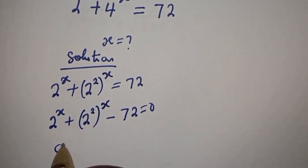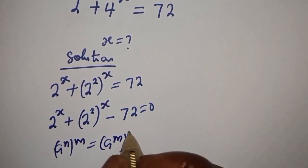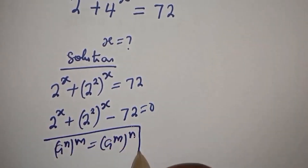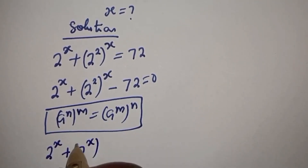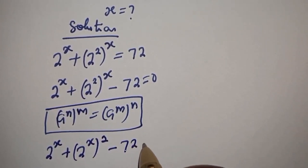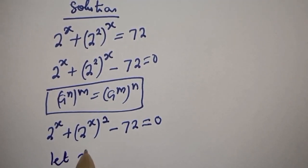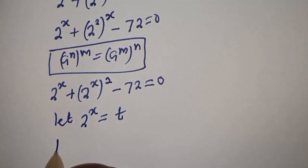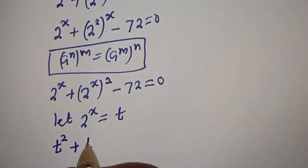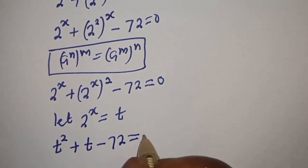Using the rule that a raised to power n, to the power of m, is equal to a raised to power m to the power of n, this becomes 2 raised to power s plus 2 raised to power s, squared, minus 72 is equal to 0. So, let 2 raised to power s be equal to t. Then t squared plus t minus 72 is equal to 0.